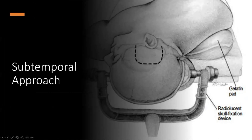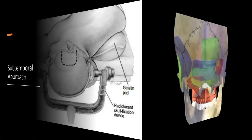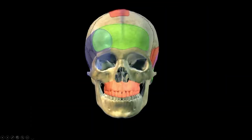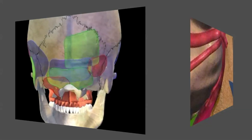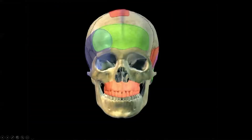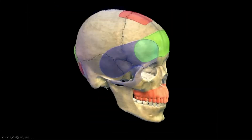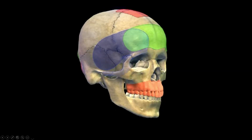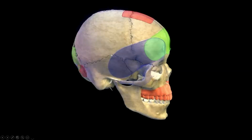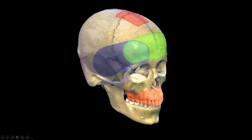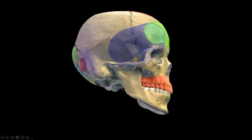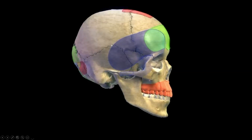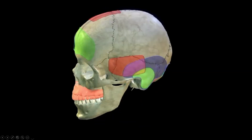The problem we've seen is there's a limit for the orbital zygomatic approach. The limit is that I cannot go too far down in the petroclival region, posterior fossa. The limit is defined by the posterior crown. So if I have a lesion which is a little bit more inferior, I need to use a more lateral approach.